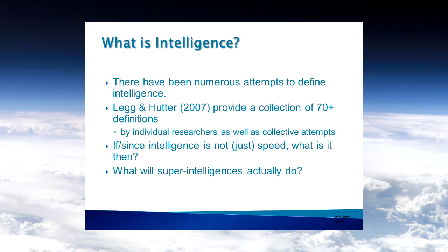Much of this has to do with what intelligence is. Legg and Hutter have provided a collection of 70-plus definitions of intelligence, by both individuals and groups. If it's not just speed, then what is it? We think it's probably not just speed — if I'm smarter than you, it's not just that my brain works faster, it also works better. What will super-intelligences actually do, and how do we judge that?